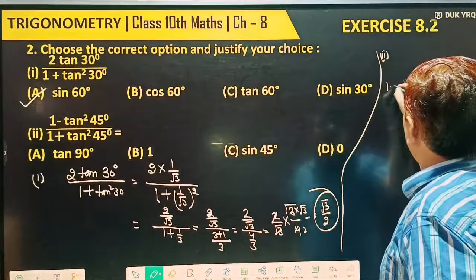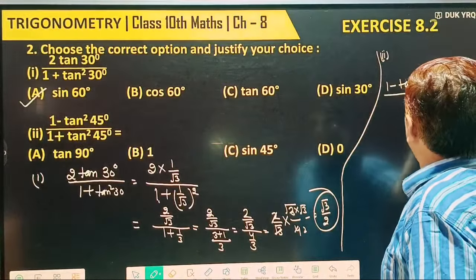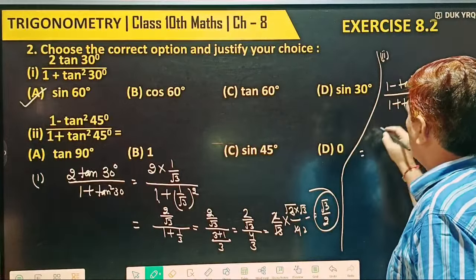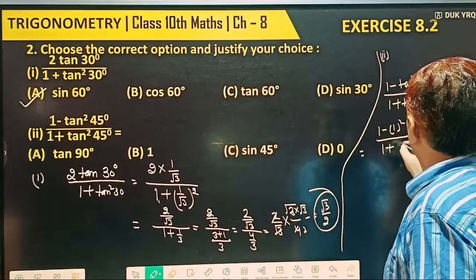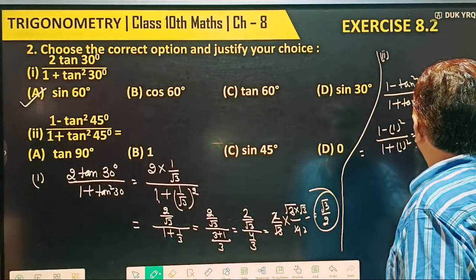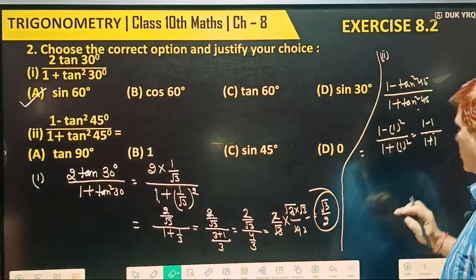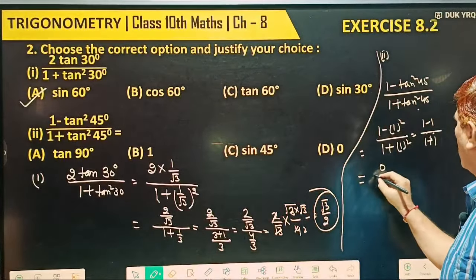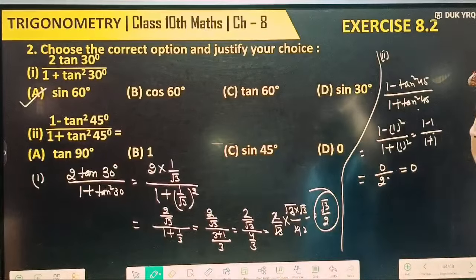Now taking the second part. We have 1 minus tan square 45 divided by 1 plus tan square 45. We know tangent 45 is equal to 1. So substituting: 1 minus 1 squared over 1 plus 1 squared, meaning 1 minus 1 by 1 plus 1. This becomes 0 by 2, which is equal to 0.